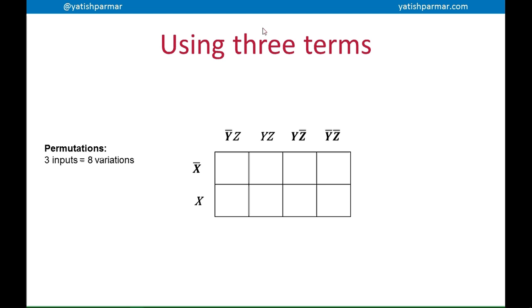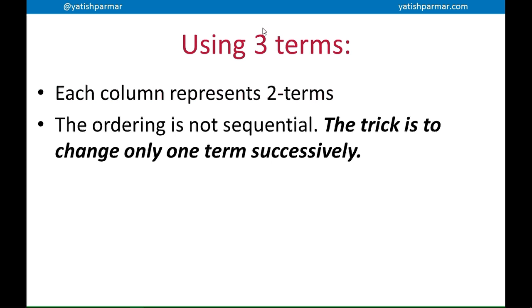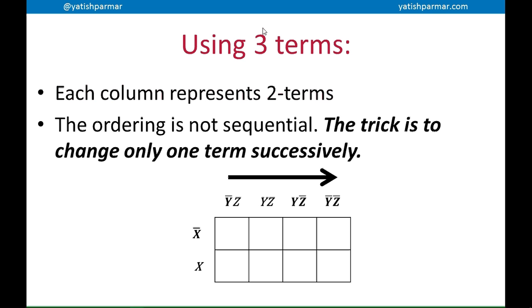And if you want to use three terms, you need to have space for eight coordinate pairs. Well, it's not pairs anymore, coordinate triads on your K-map. Because remember when you've got three inputs, therefore you've got eight variations. You should know that from when you've been doing your permutations.